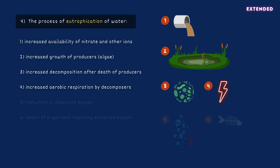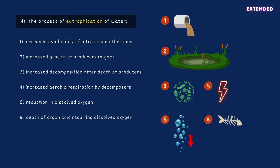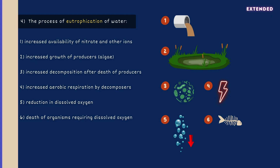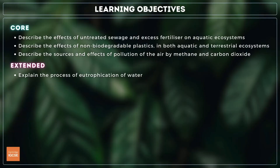Algae are broken down by bacteria, which acquire their energy through aerobic respiration. This gradually removes dissolved oxygen from the water, resulting in the death of animals that rely on oxygen for survival. Well done, you've just covered absolutely everything you need to know on topic 20.3, pollution.